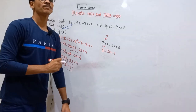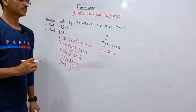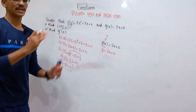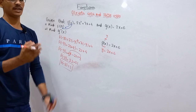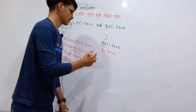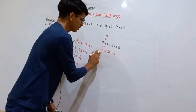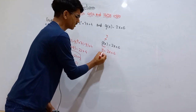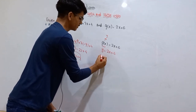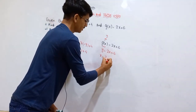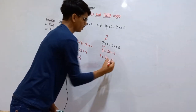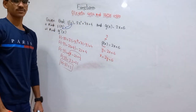The second step is to interchange the variable x with y and y with x. We are going to interchange the variables: interchange y with x and x with y, giving x = 2y + 6. This is our second step.